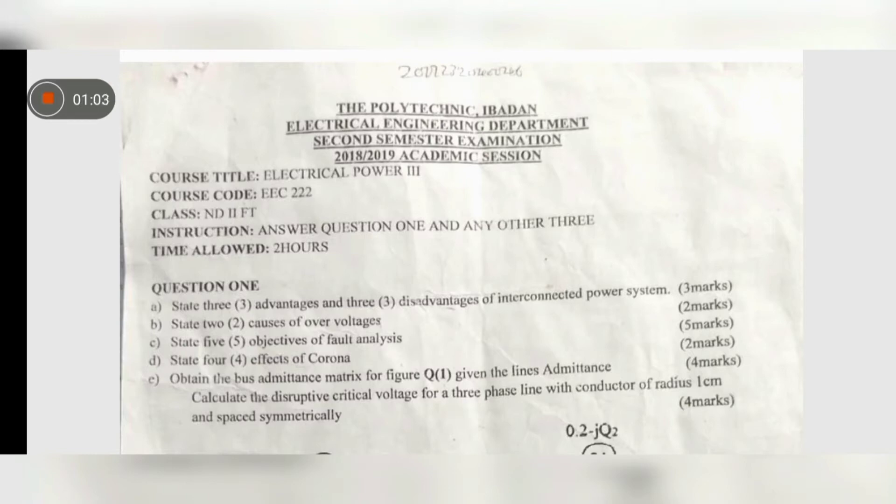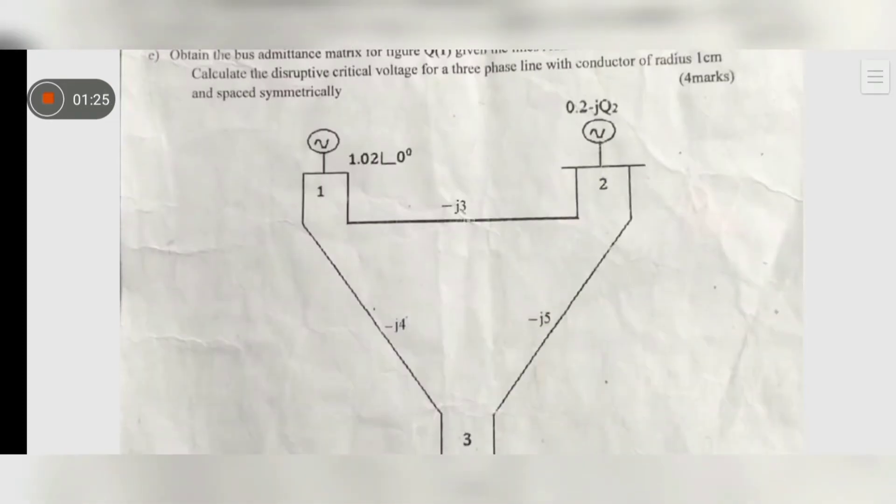We asked to state three advantages and three disadvantages of interconnected power system. State two causes of overvoltage. State five objectives of fault analysis. State four effects of corona. Obtain the bus admittance matrix for the figure in question.